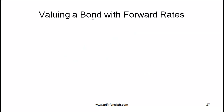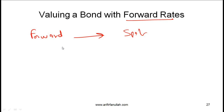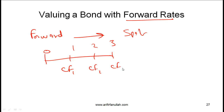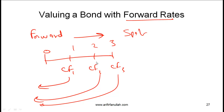Finally, how do we value a bond with forward rates? The idea is simple. From forward rates you can derive spot rates, and once you have your cash flows on a given bond, you discount them back using the spot rate curve. As a quick summary: from forward rates you calculate spot rates, and from spot rates you calculate the present value of the various cash flows, which gives you the value of the bond.